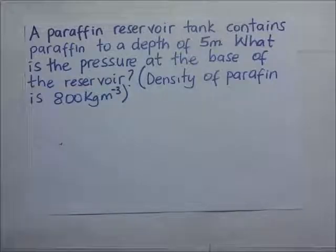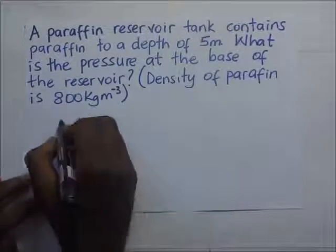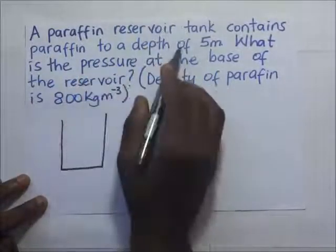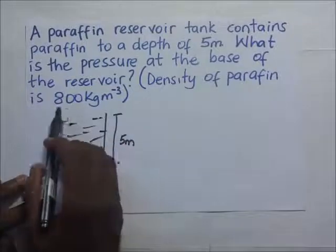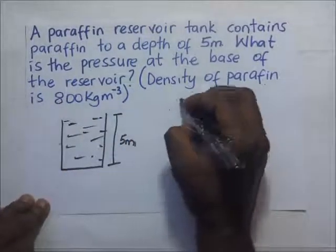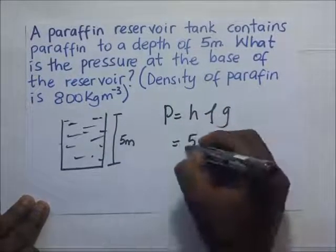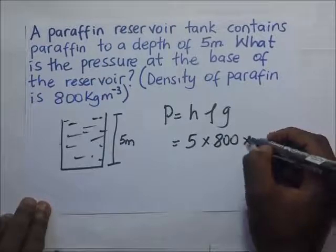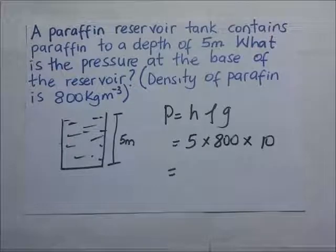The third example: a paraffin reservoir tank contains paraffin to a depth of five meters. What is the pressure at the base of the reservoir? The density of paraffin is 800 kg/m³. Pressure equals height times density times gravity: five meters times 800 kg/m³ times ten, giving an answer of 40,000 newtons per meter squared.